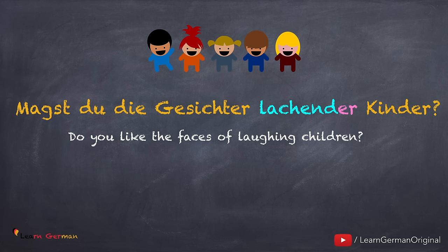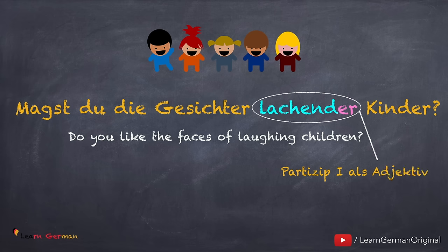Auch bei Genitiv muss man die richtige Endung benutzen. Magst du die Gesichter lachender Kinder? Lachend ist Partizip 1 für lachen und bekommt die Endung -er, weil Kinder hier Plural ist. When you are using Partizip 1 of a verb as an Adjektiv, it is placed before the noun, and you should accordingly use the correct Adjektiv ending.